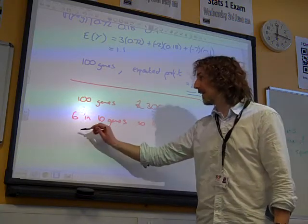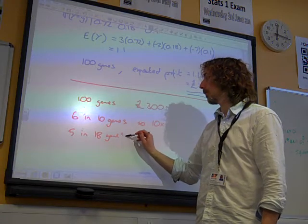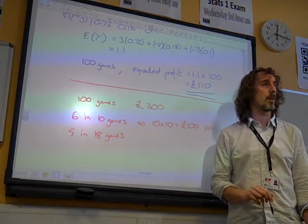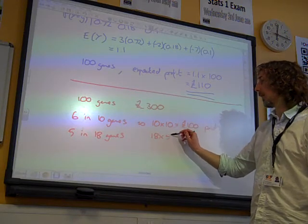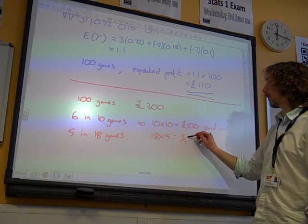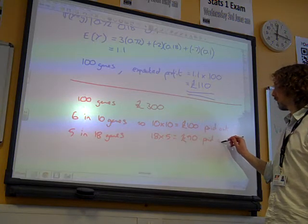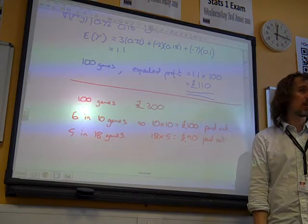a 5 would happen in a fifth of those 90 games. So, that would be 18 games that we'd score a 5. So, we're going to have 18 times 5 paid out. So, that's another £90 paid out for the people who won 5s. And we just need to add all this up.